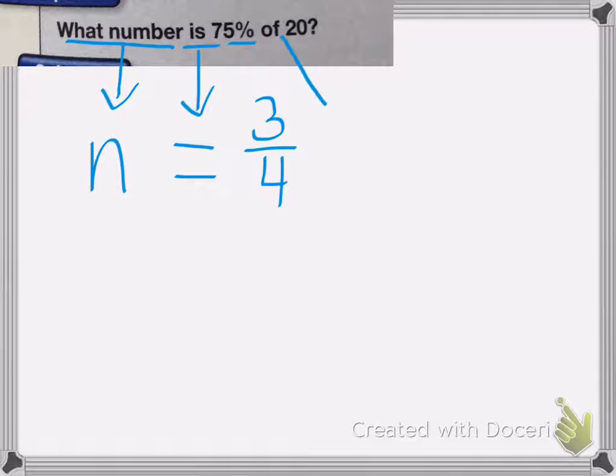So three-fourths of is multiply, and then 20. And we'll just do 20 over 1. Now remember, you cannot multiply by a percent. You have to change it to a fraction or a decimal.